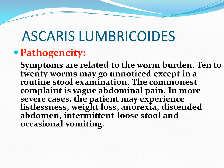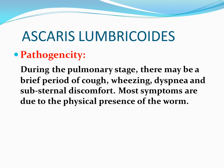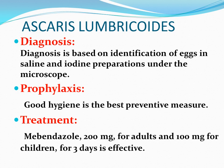Coming to pathogenicity, the symptoms are related to the worm burden. Ten to twenty worms may go unnoticed except on routine stool examination. The commonest complaint is vague abdominal pain; in more severe cases, the patient may experience listlessness, weight loss, anorexia, distended abdomen, intermittent loose stool, and occasional vomiting. During the pulmonary stage, when larvae are present within the lungs, the person may experience a brief period of cough, wheezing, dyspnea, and sub-sternal discomfort due to the physical presence of the worm within the lungs.